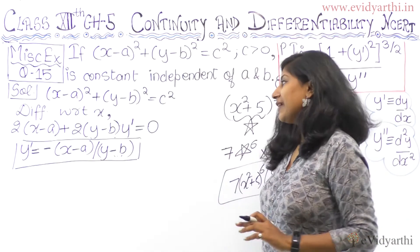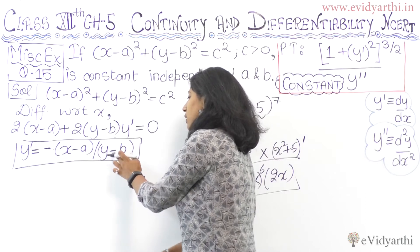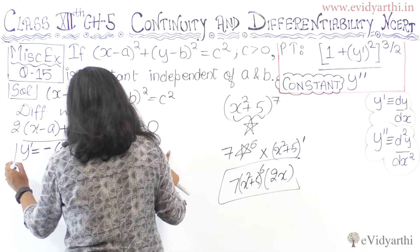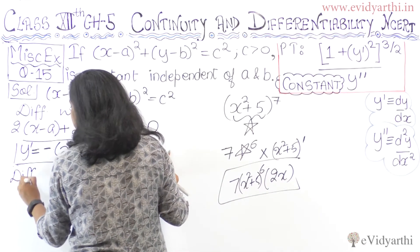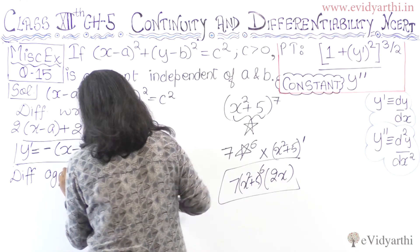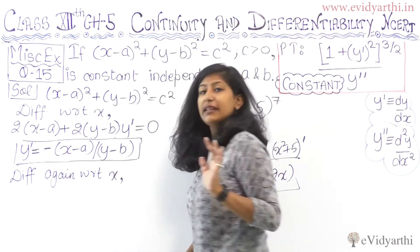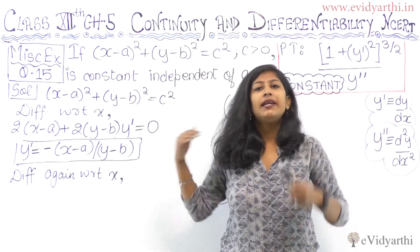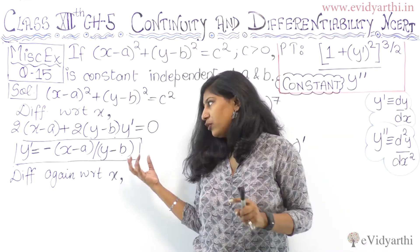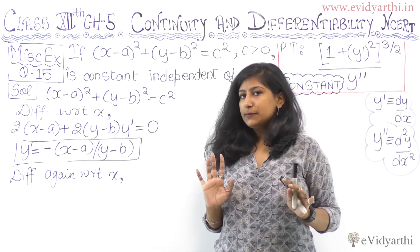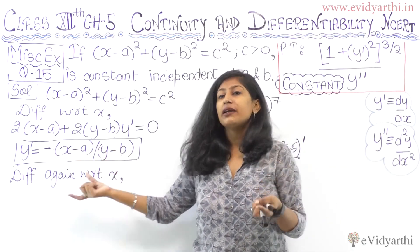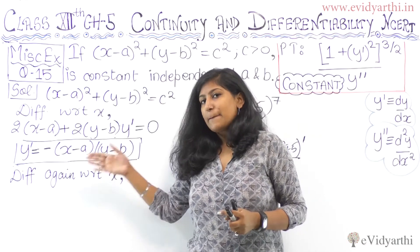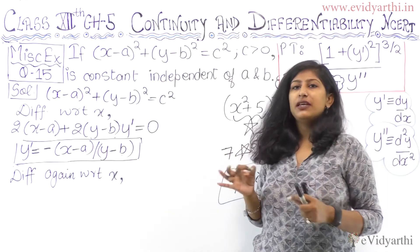Now, differentiating again with respect to x to find y double-dash. We have something upon something, so we apply the quotient rule. If u and v are functions of x, then the derivative of u upon v is (u-dash times v minus u times v-dash) upon v squared. If you don't know this formula, please see the introduction of this video where I have explained all the rules.